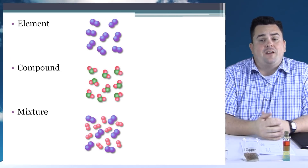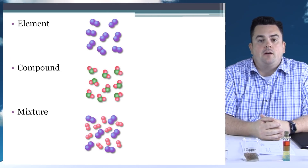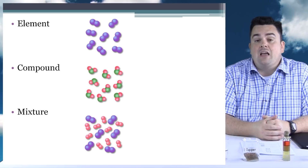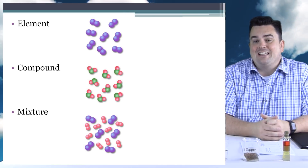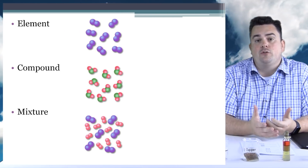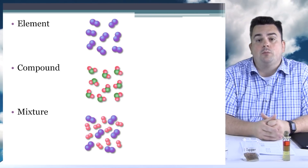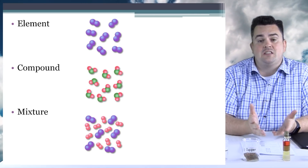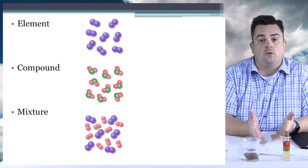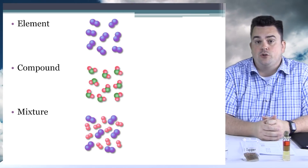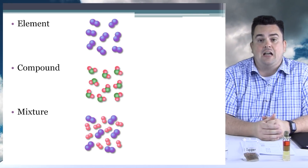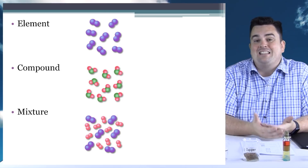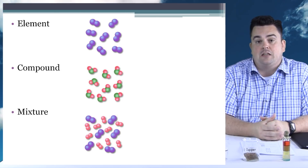Now we're going to look at different types of matter. The first of which is an element, and we have here a diatomic element represented by two identical purple circles. Remember, diatomic elements — it's still a molecule because there's two atoms connected together. But we have an element because it's two identical atoms connected together.